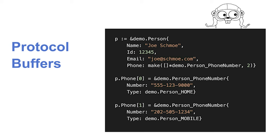At Square, we extend protocol buffers to add things like ACLs for authentication, deadlines, retries, and timeouts. You actually define that in your service — for example, you might say a service is idempotent and can be retried up to five times. You define that in your protocol buffer type, so your code doesn't have to deal with all that logic.